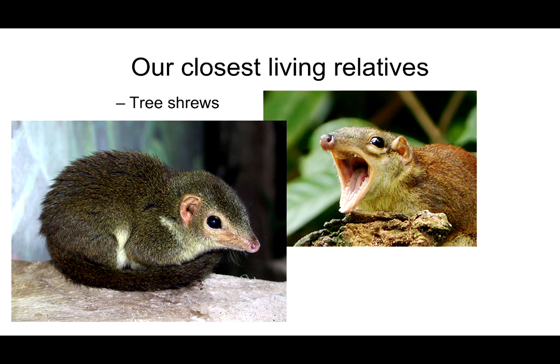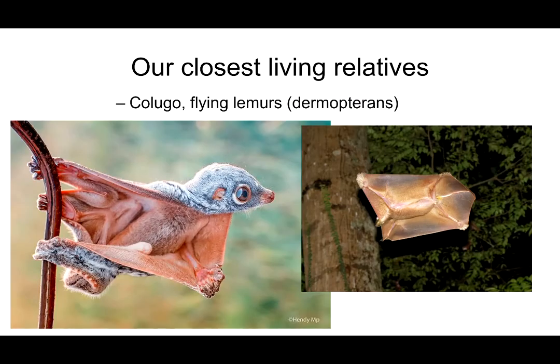Then there are the tree shrews, the order Scandentia, and the Dermopterans, which includes colugos and flying lemurs that neither fly nor are they lemurs. But they do have these huge skin flaps that they use to glide from tree to tree. There is one genus and two species that both live in Southeast Asia.